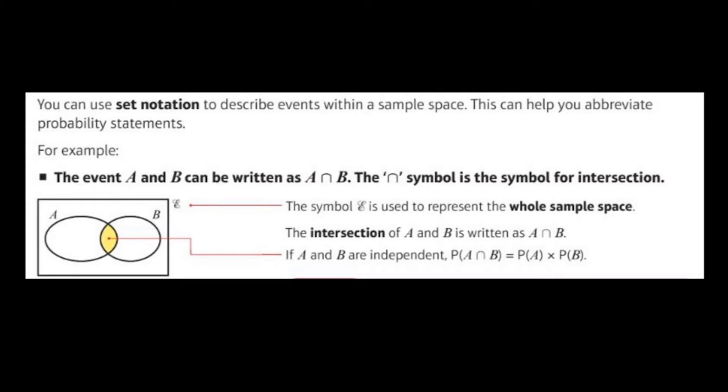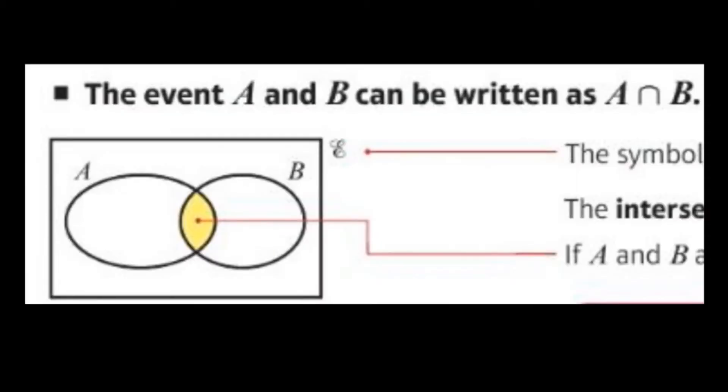Firstly, the intersection symbol. That's the symbol here that some people say looks like an upside down U. Maybe it looks like an N. It's an intersection symbol. This is going to be used just to show that both conditions are true.